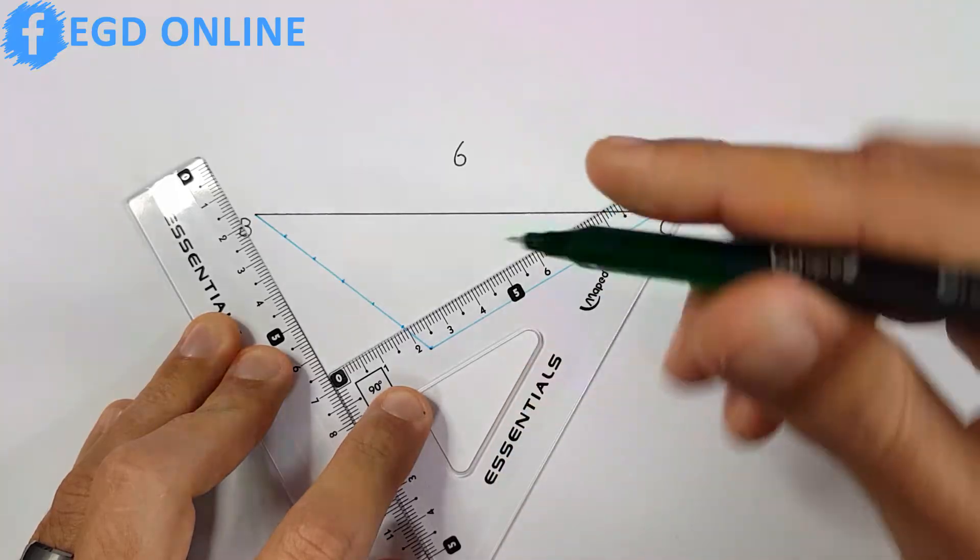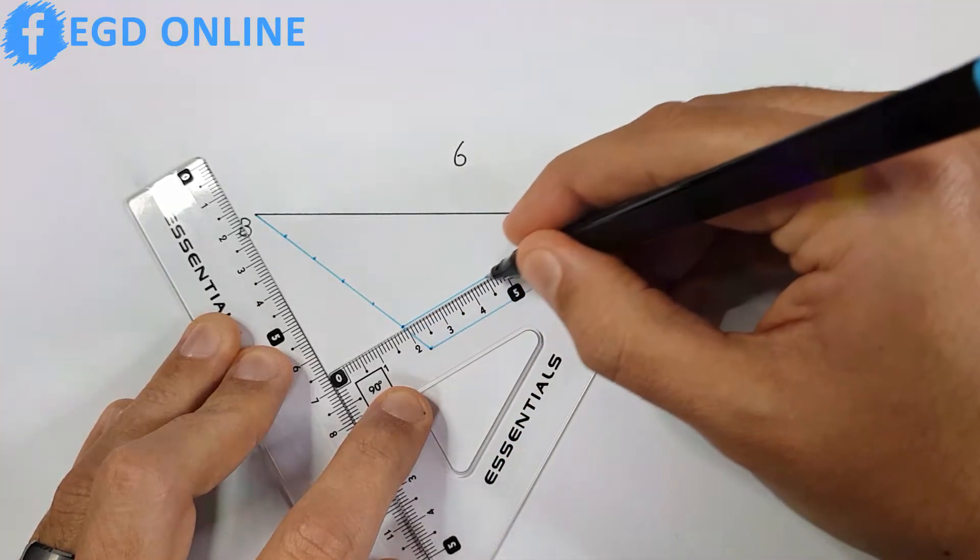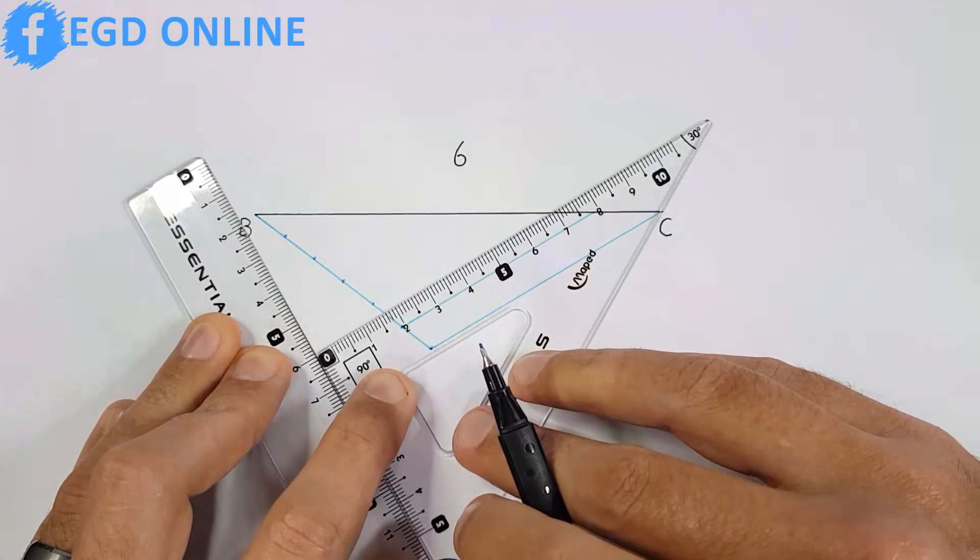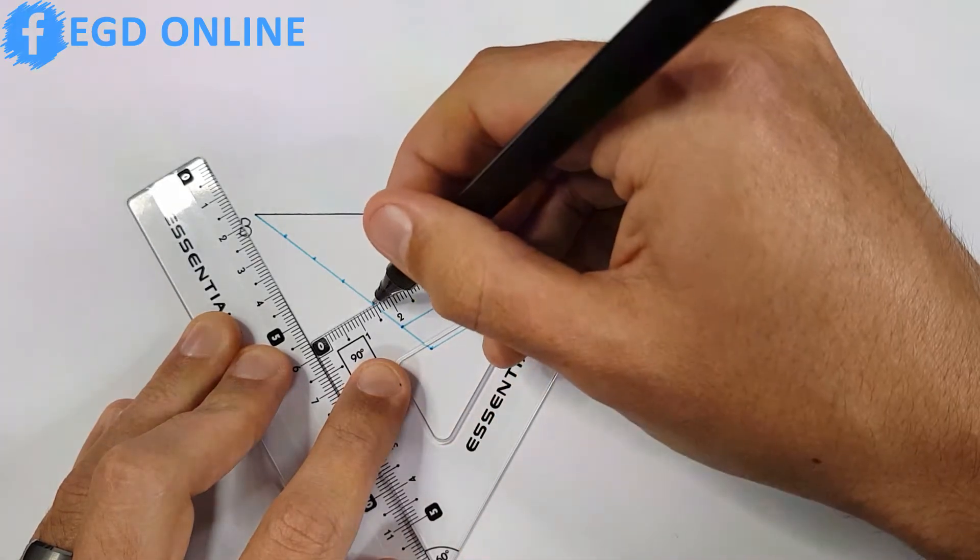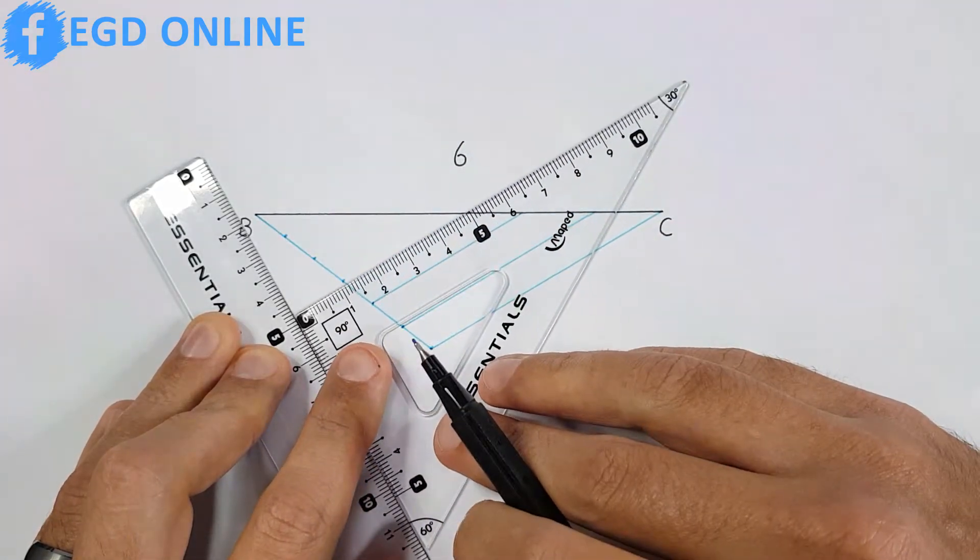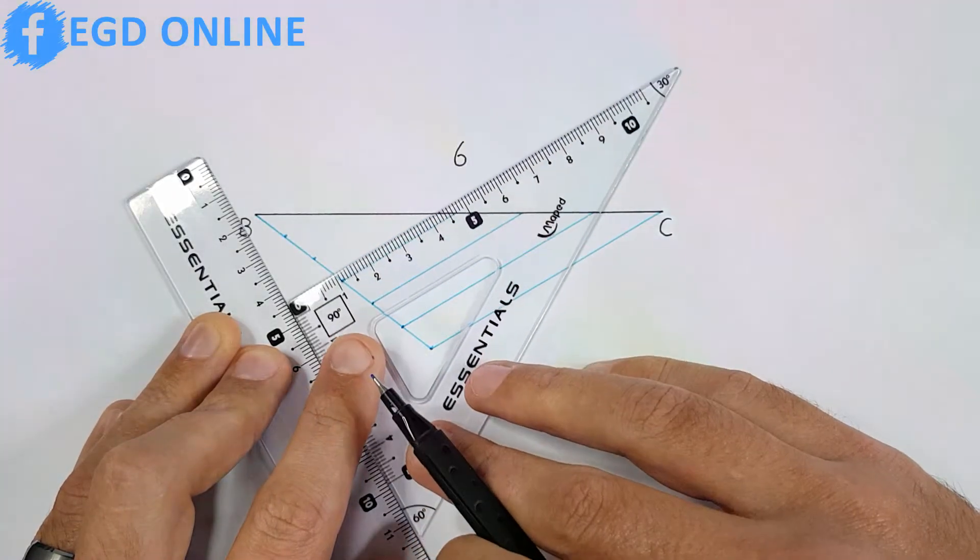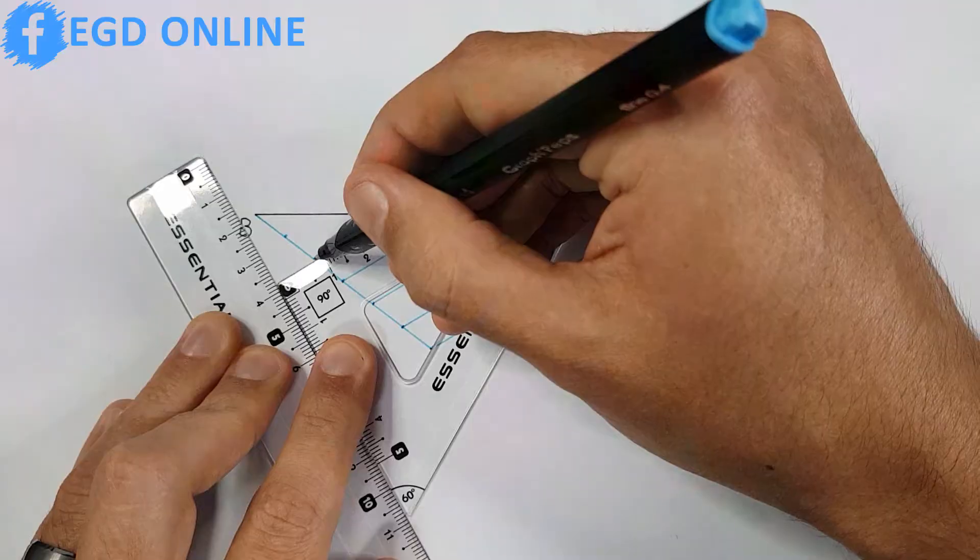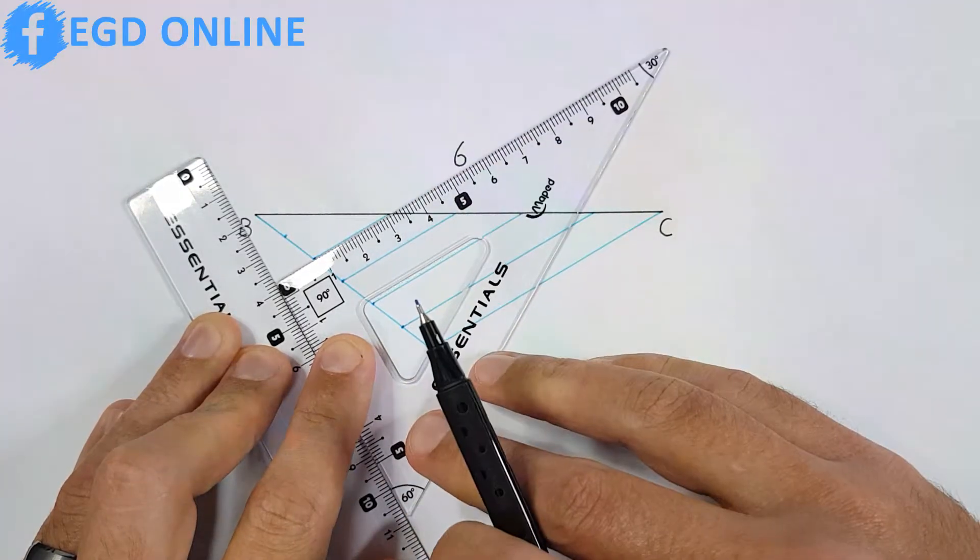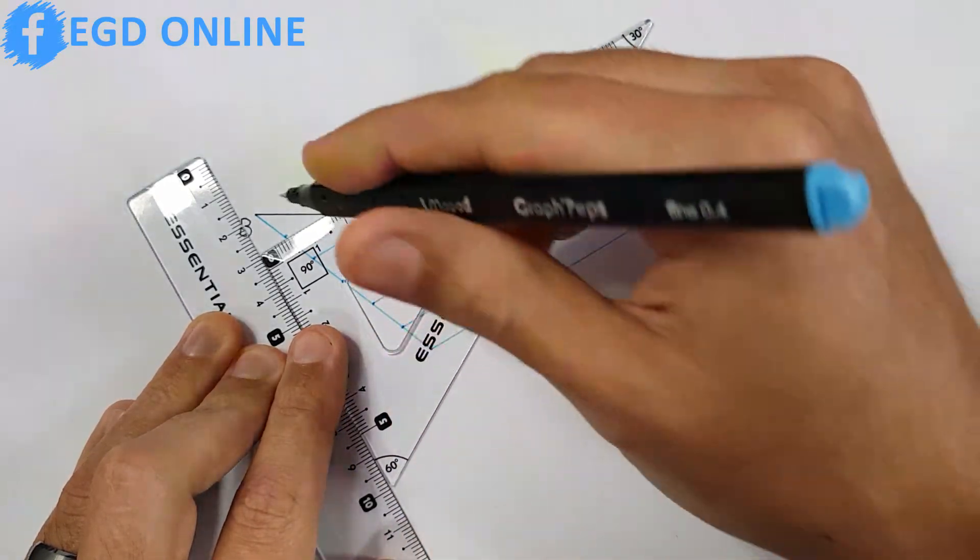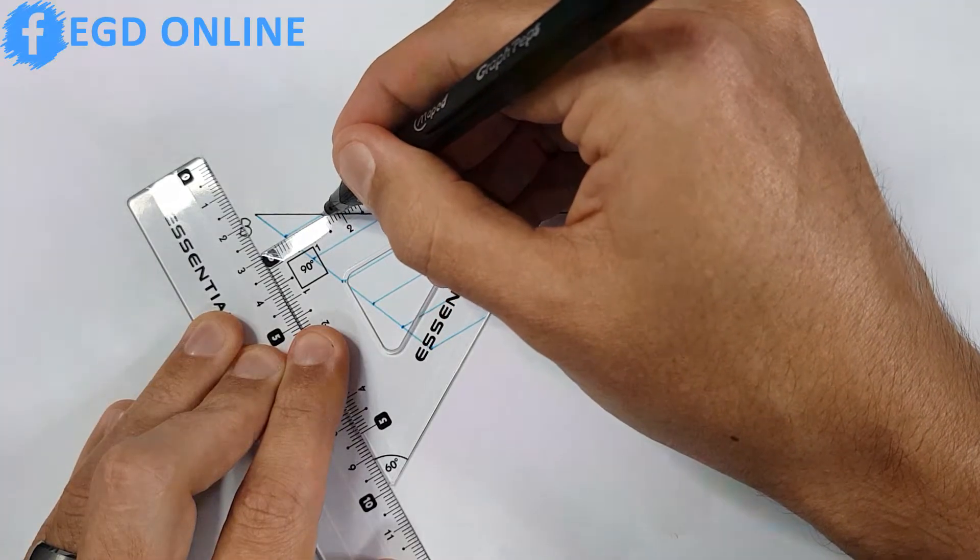Slide your triangle along your ruler and project each divided part onto our given line.